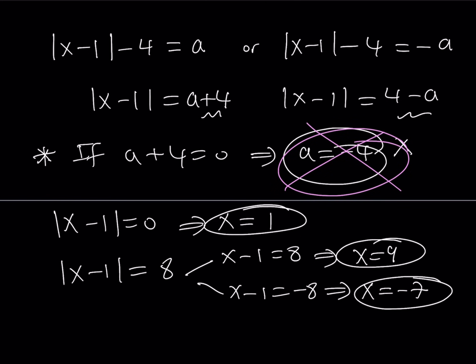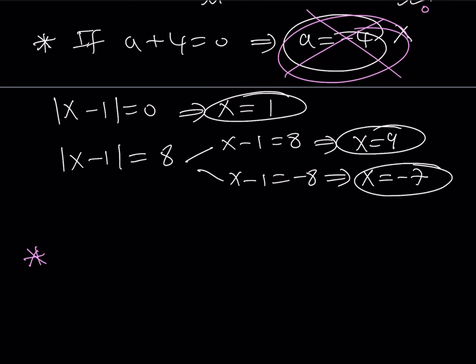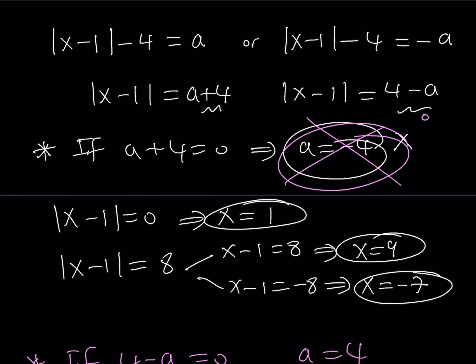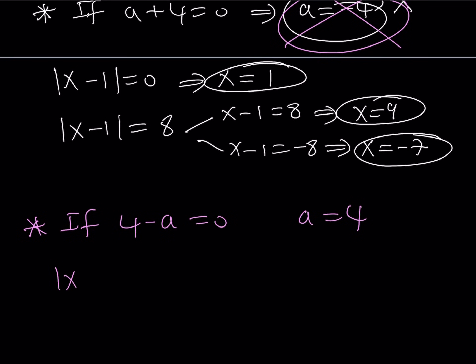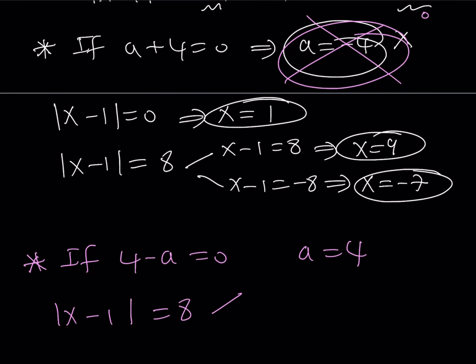Let's go ahead and look at the second case, where we have this expression equal to 0, which is 4 minus a. If 4 minus a is equal to 0, which means that a is equal to 4, then I get the following. The first one becomes the absolute value of x minus 1 equals a plus 4. If a is equal to 4, this is going to equal 8. From here, I get x equals 9 and x equals negative 7 as before.